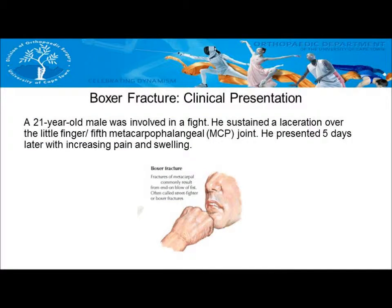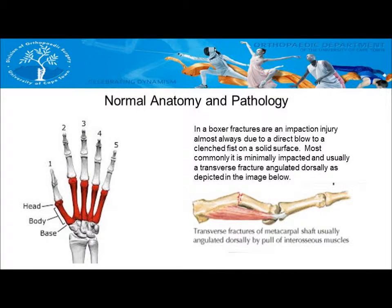A 21-year-old male was involved in a fight and sustained a laceration over the little finger. He presented five days later with increasing pain and swelling. On the right-hand side, one can see the normal anatomy of the metacarpals. In a boxer fracture, there is an impaction injury almost always due to a direct blow to a clenched fist hitting against a solid surface.